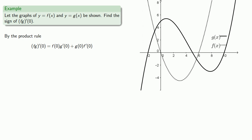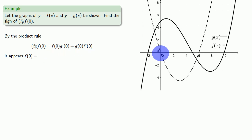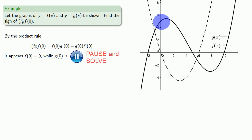Since we have the graph of y equals f of x, it appears that f of 0 — the y value when x is equal to 0 — is equal to 0. Likewise, since we have the graph of y equals g of x, then g of 0, the y value when x is equal to 0, is going to be positive. We also need to know g prime of 0 and f prime of 0.